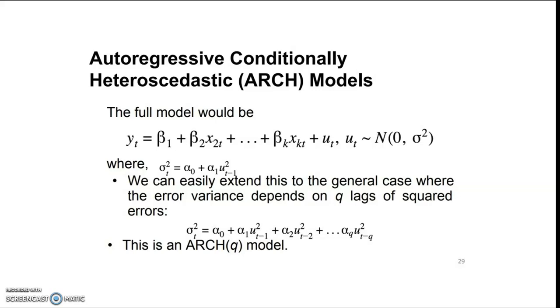We can easily extend this model to the general case where the error variance depends on q lags of squared errors. That could be written as σ²t = α₀ + α₁ut₋₁² + α₂ut₋₂² + ... + αₑut₋ₑ².